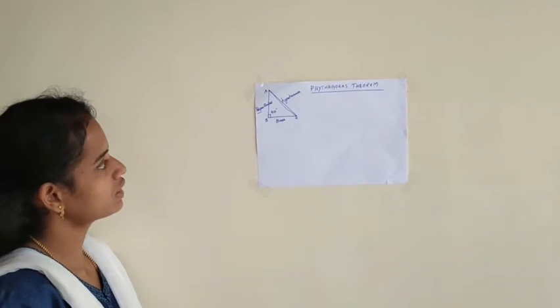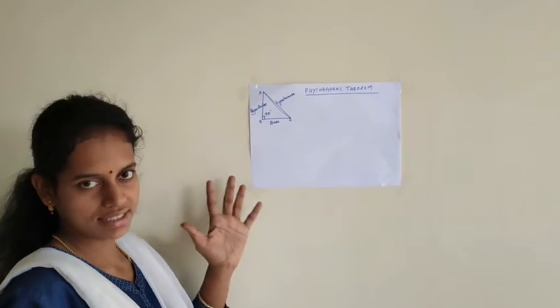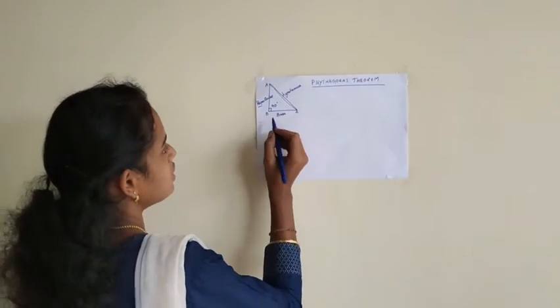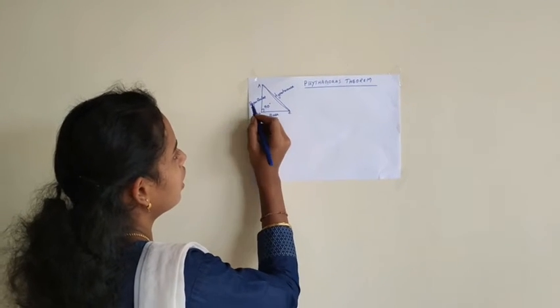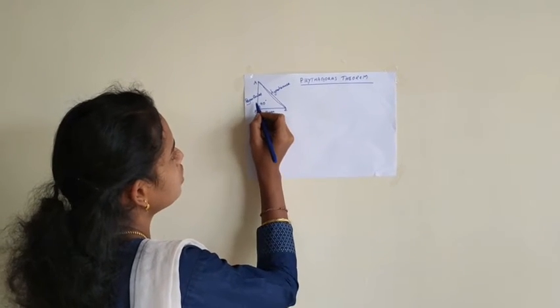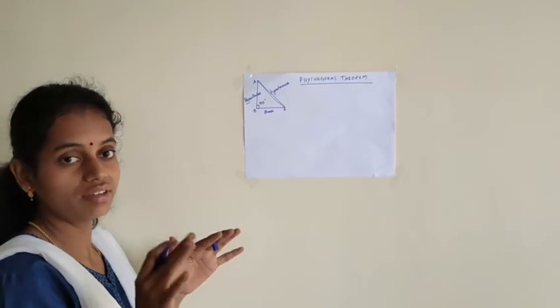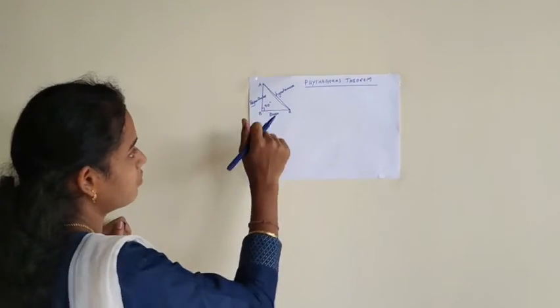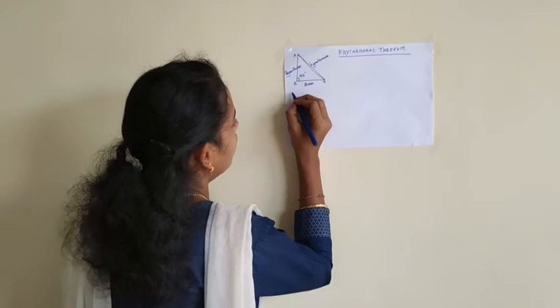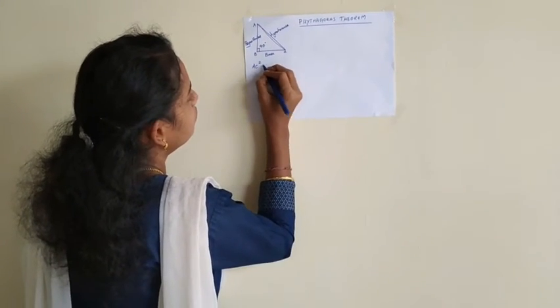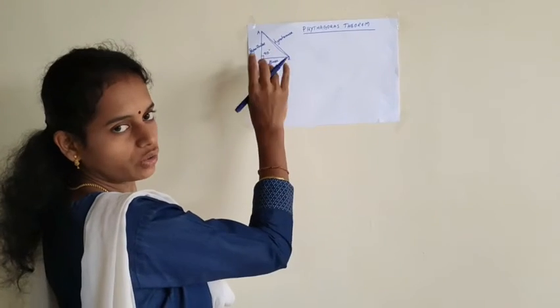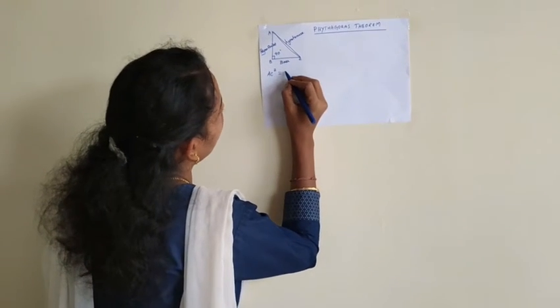What Pythagoras theorem clearly states is that the sum of the squares of two sides is equal to the square of the longer side of a right angle triangle. That means AC square is always equal to the sum of squares of the other two sides.